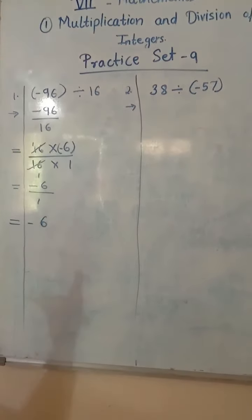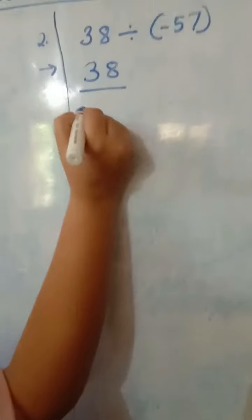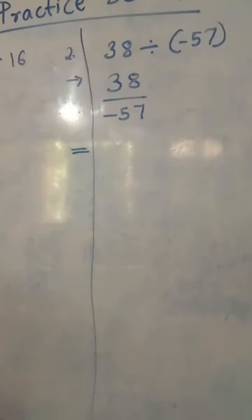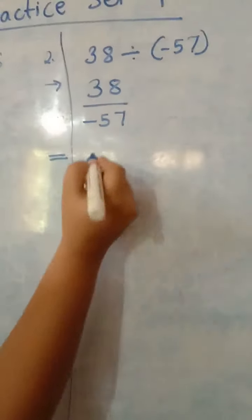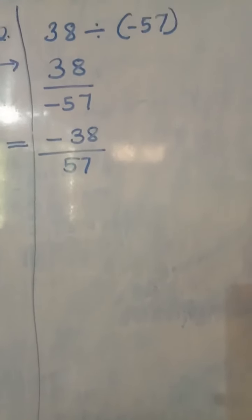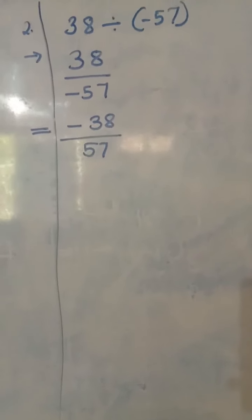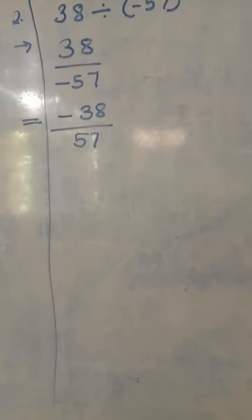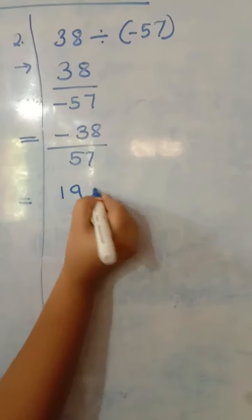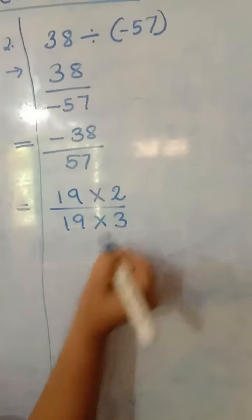Now we will go to the next sum. First write it in fraction form: 38 divided by negative 57. We know the negative sign should not be in the denominator — it should be in the numerator. So we write negative 38 divided by 57. Now think of a table in which both numbers appear. You should learn tables up to 20 so you get answers quickly. They are in the 19's table: 19 twos are 38 and 19 threes are 57.